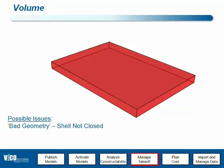Sometimes it happens during the published operation — it is not always that the CAD application is sufficiently accurate to give us the polygons in such a way that a closed body is the result. So in VicoOffice, that results in the warning triangle, which doesn't mean that VicoOffice is a bad piece of software. It means that the geometry received from the CAD application did not result in a closed body, and therefore volume cannot be calculated.